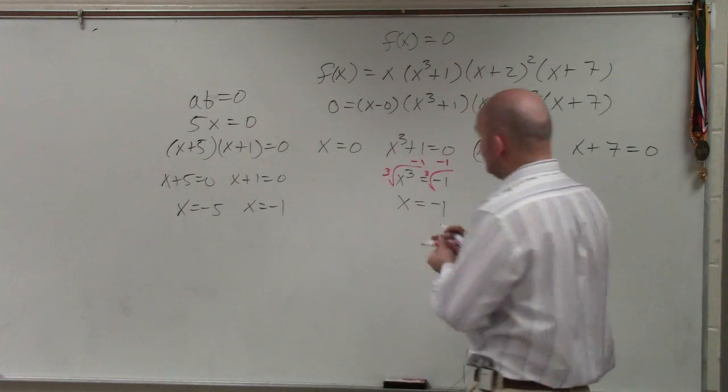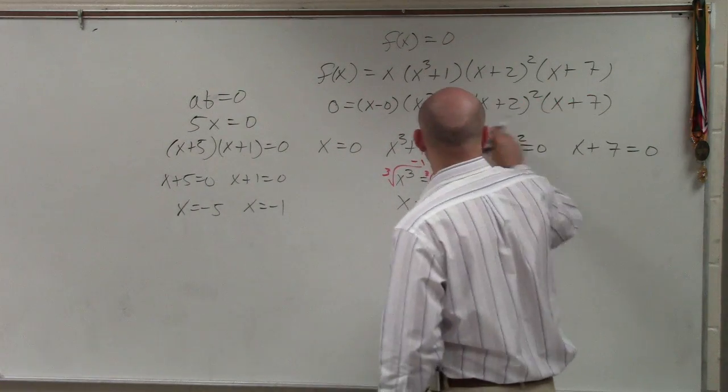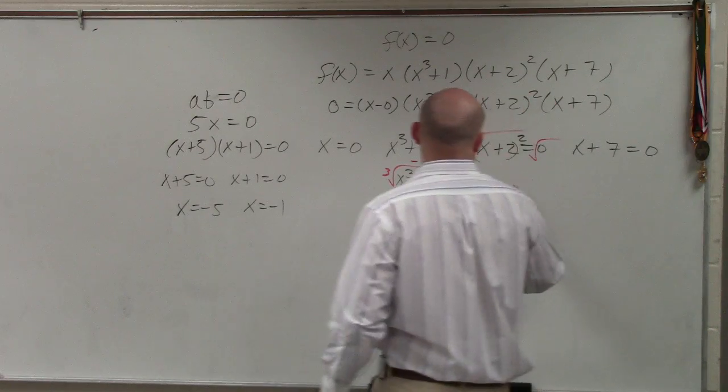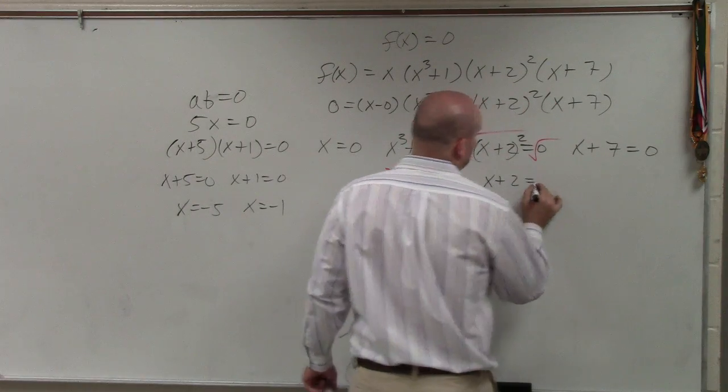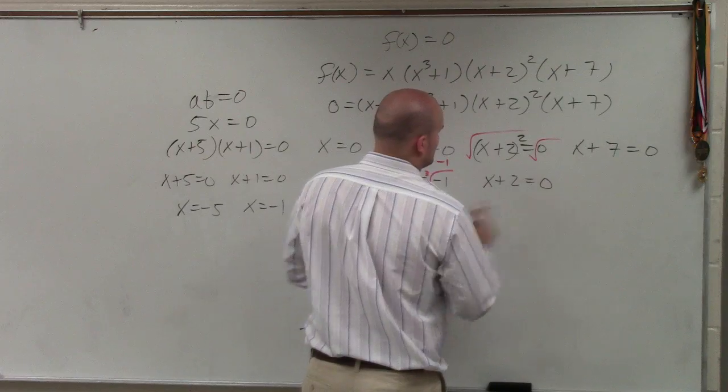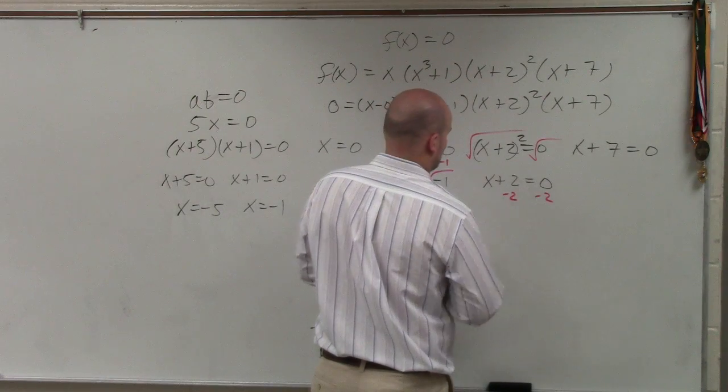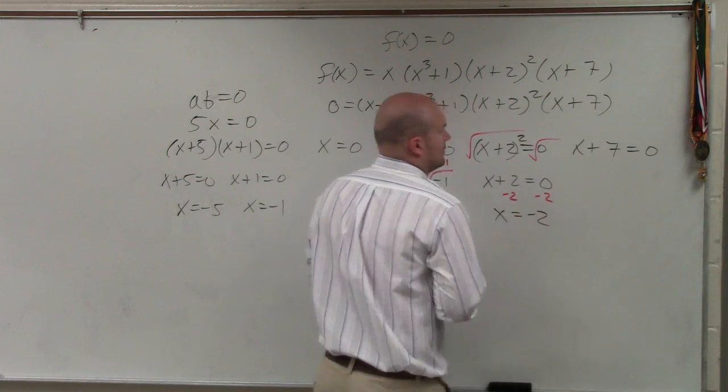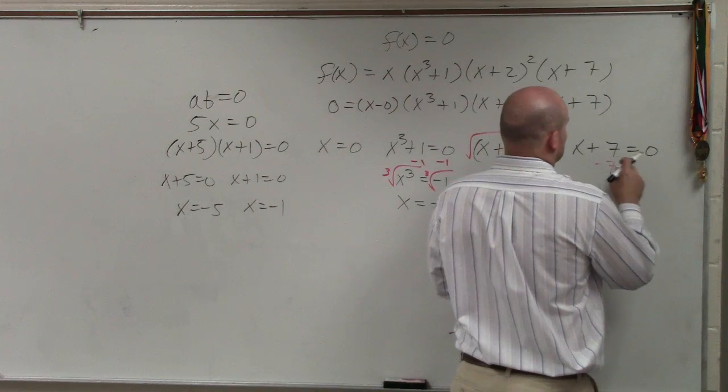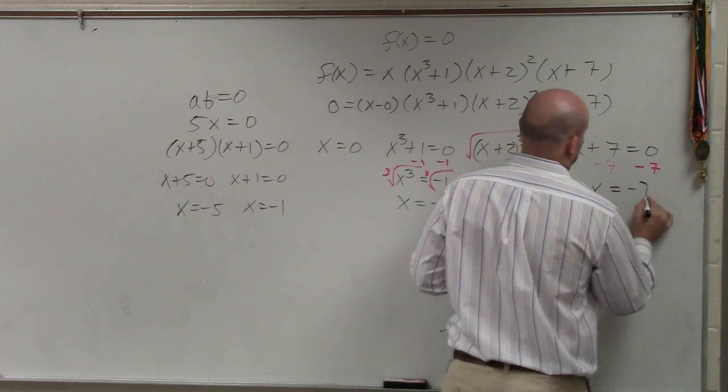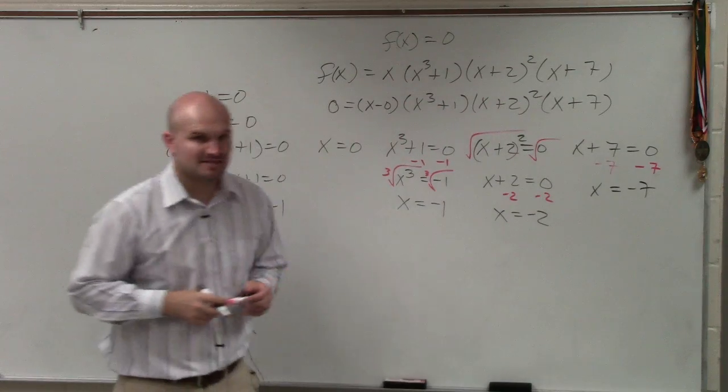So over here, you need to undo the squaring. So I'm going to take the square root. x plus 2, square root of 0 is just... Then we solve here, minus 7, minus 7. Does everybody see?